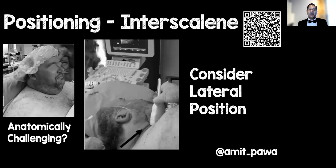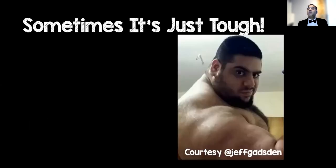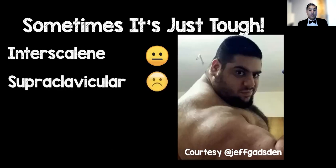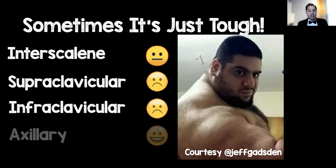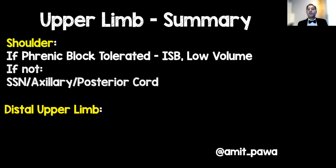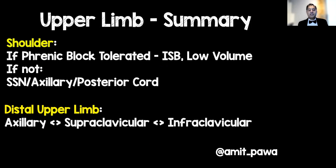If placing a probe in the interscalene groove is challenging, consider the lateral position — the tissue falls away making it much easier. Sometimes blocks are simply tough to site; supraclavicular and infraclavicular may be challenging, but the axillary brachial plexus block may not be as difficult because those structures tend to be more superficial. For shoulder: low-volume interscalene plus or minus a catheter if phrenic is tolerated; if not, look at alternatives. For distal upper limb, choose your most comfortable technique — axillary is reliable, and don't forget peripheral nerves.